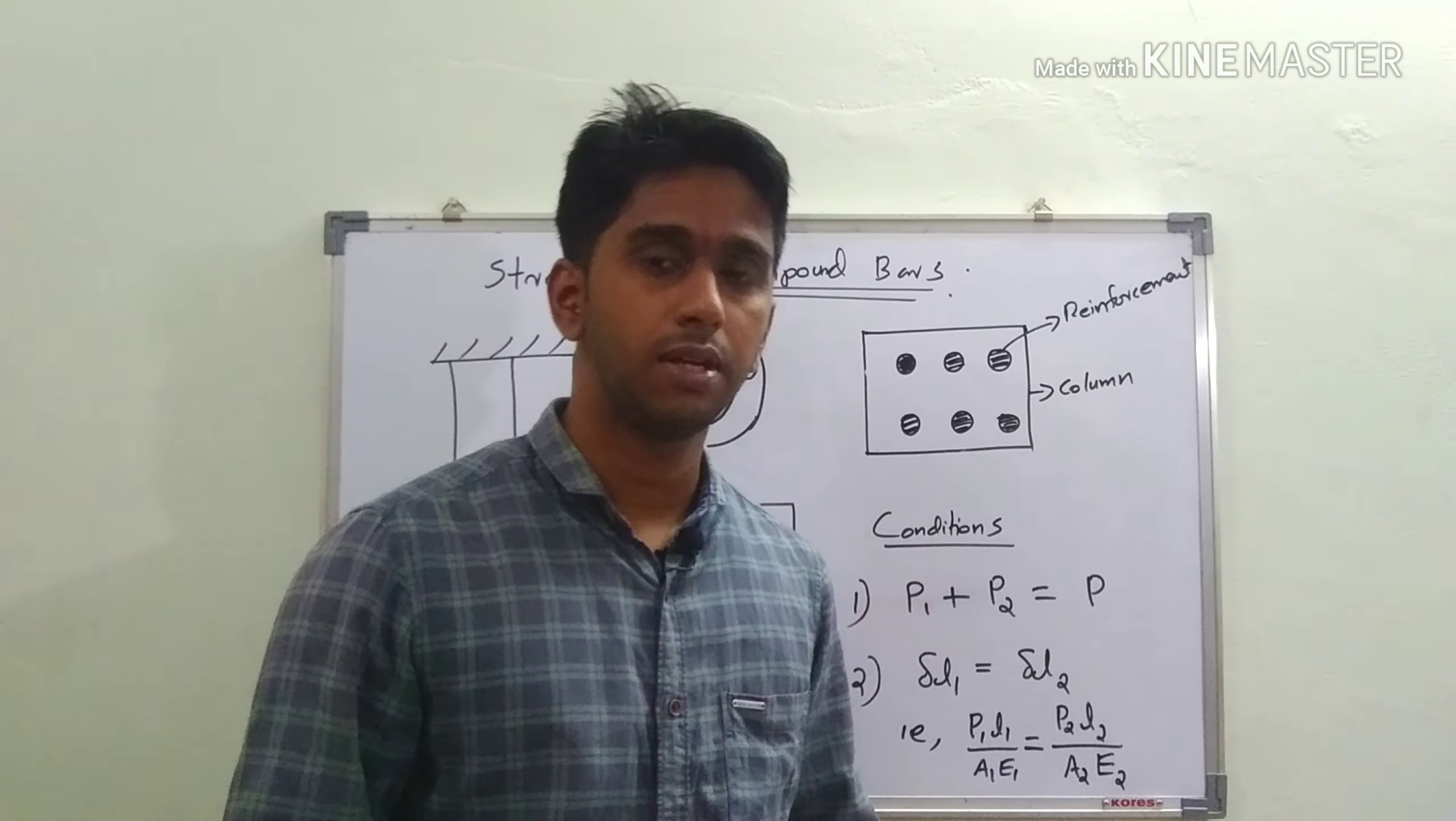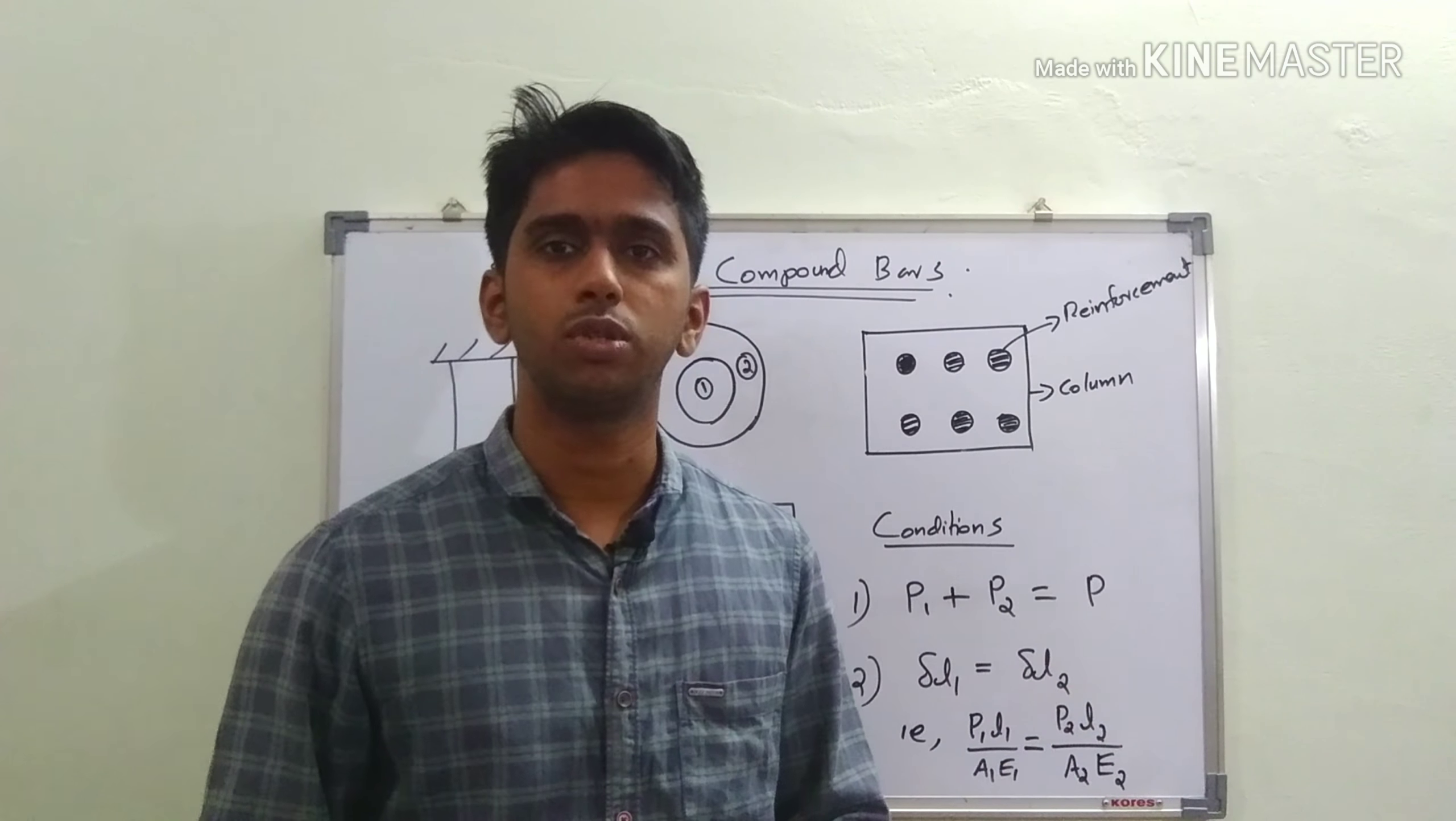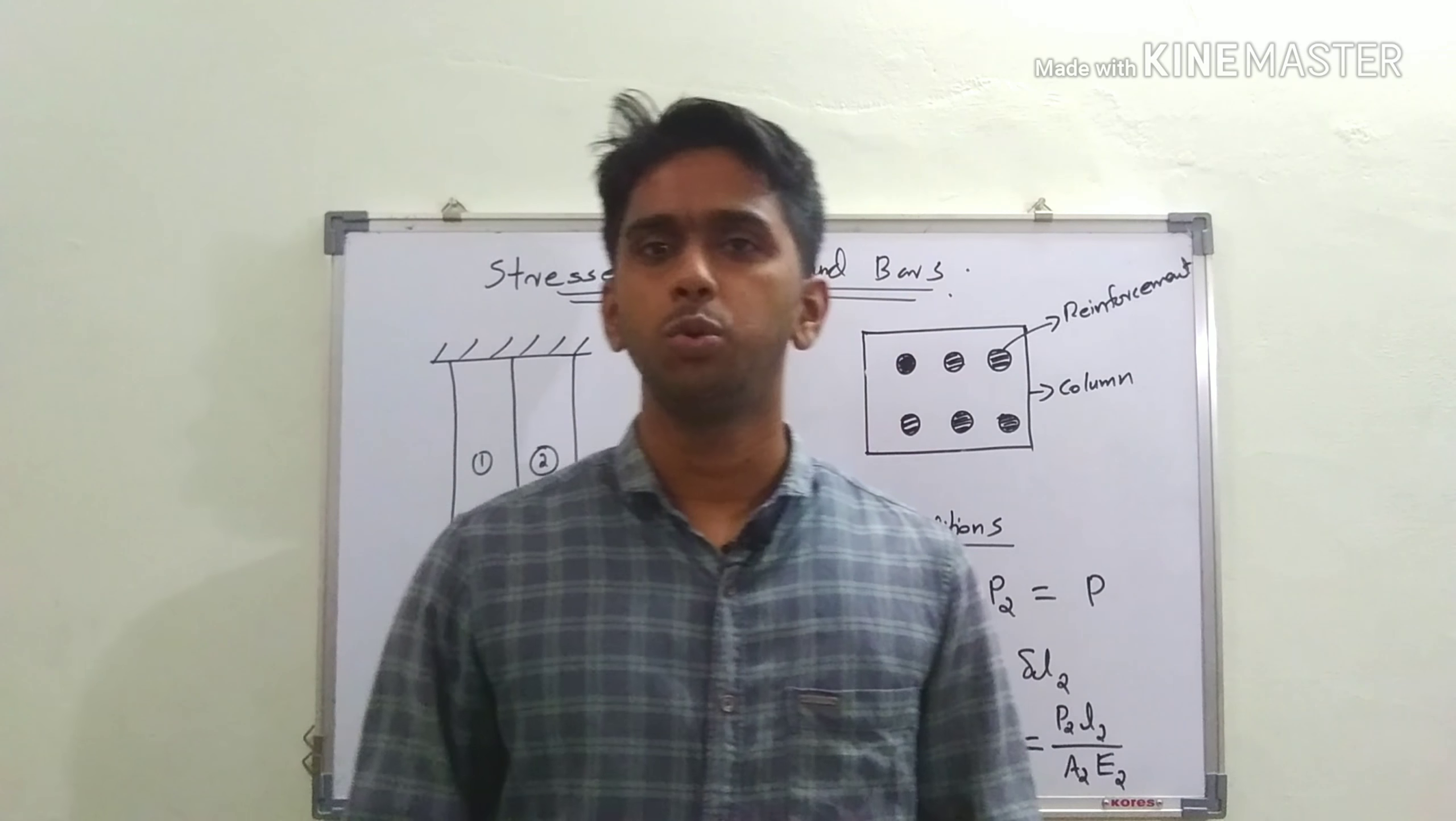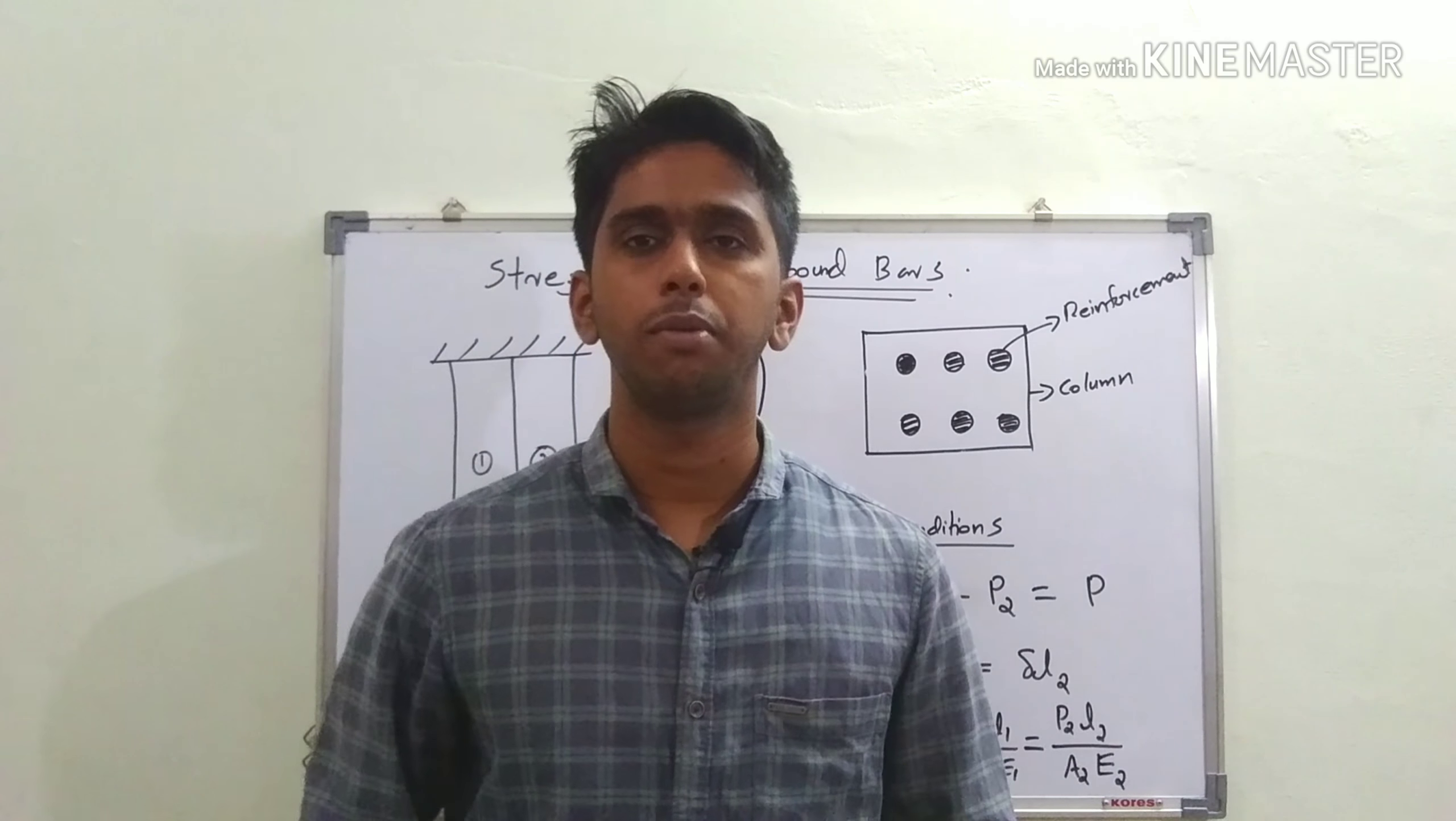In problems of composite bars, you may be asked to find the stresses in both materials. Once you have P₁ and P₂ values by solving these equations, you can simply divide by the corresponding areas: P₁/A₁ gives the stress. This is very simple—just formulate two equations and solve them.